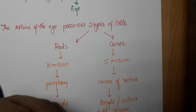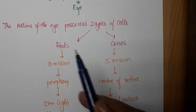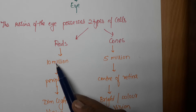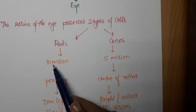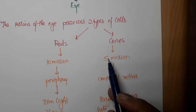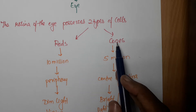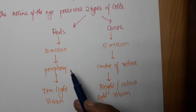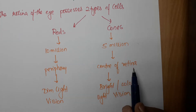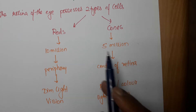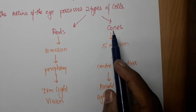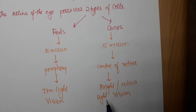So in the retina there are two types of cells: cones and rods. In the human eye there are 10 million rods and 5 million cones. Rods are present in the periphery area whereas cones are present in the center of the retina. Rods are involved in dim light vision and cones are involved in bright or color-like vision.